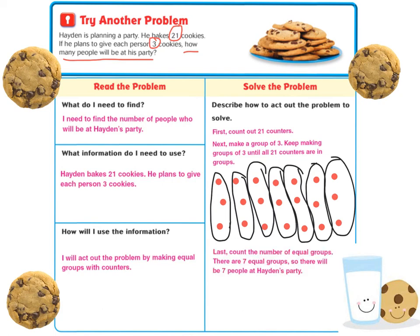Last, count the number of equal groups. There are seven equal groups, so there will be seven people at Hayden's party.